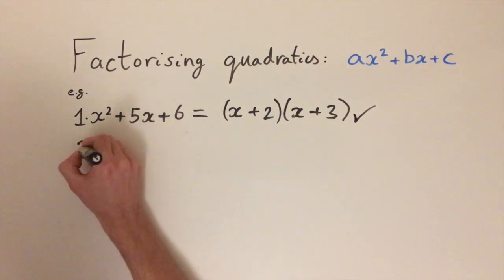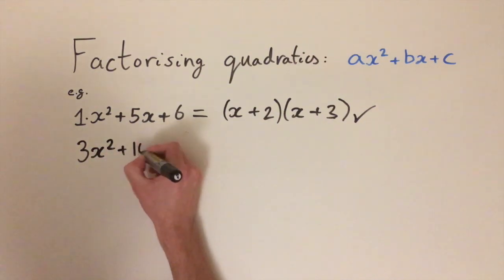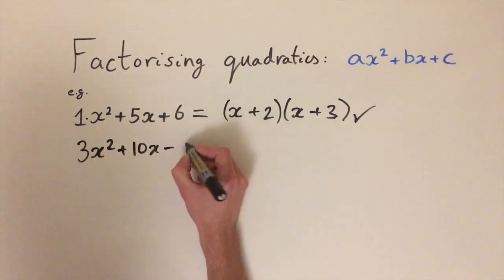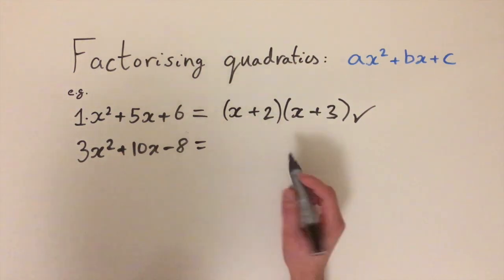So now let's look at a bit of a harder example. Let's do 3x squared plus 10x minus 8. So now we've got a coefficient in front of the x squared term that isn't 1. This means we need to factorize the 3 into these two brackets as the first step.